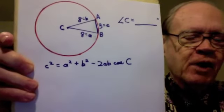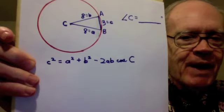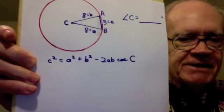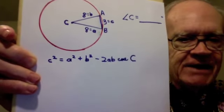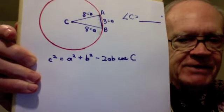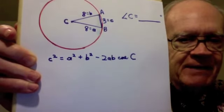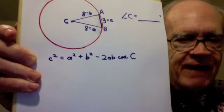The formula notation of the law of cosines that fits this problem, the way I've set it up, is c² = a² + b² - 2ab cos C.